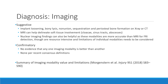There is no evidence that any imaging finding is confirmatory for FRI, and no evidence that any one imaging modality is superior. Suggestive signs include implant loosening, bony lysis, non-union, sequestration, and periosteal bone formation. MRI can help delineate soft tissue involvement, sinus tracts, or abscesses. Some nuclear imaging studies have been shown to be more accurate than MRI for FRI detection, though they are resource- and time-intensive. A useful summary of imaging modalities is available in Morgenstern's paper in Injury from 2018.